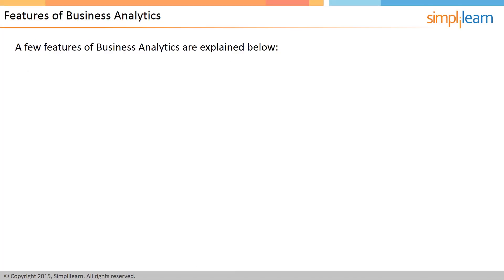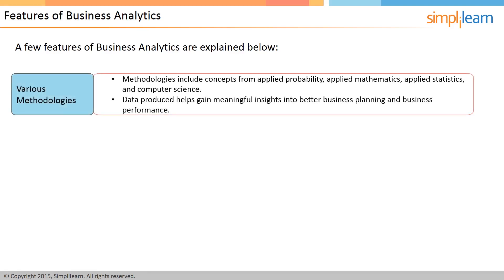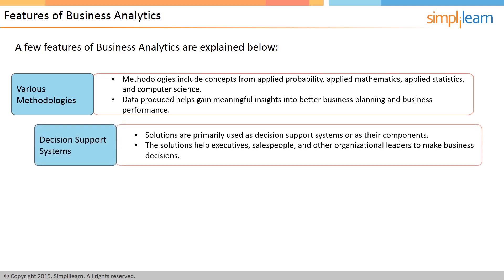The features of business analytics include support for various methodologies — concepts from applied probability, applied mathematics, applied statistics, and computer science. Data produced helps gain meaningful insights into business planning and performance. Another important feature is decision support systems: in data-driven companies, data is treated as a corporate asset. Successful analytics depends on data quality and analysts who know the business. Solutions are used as decision support systems, helping executives, salespeople, and organizational leaders make business decisions.